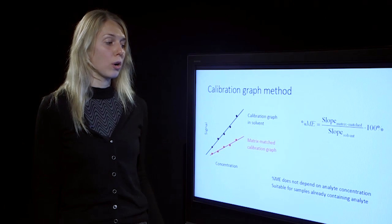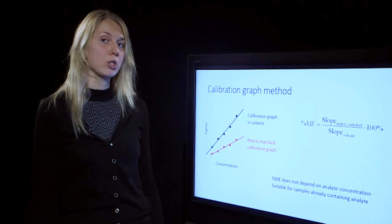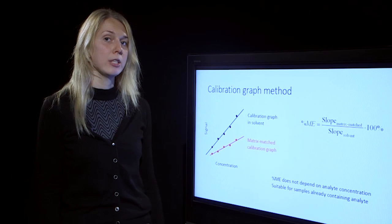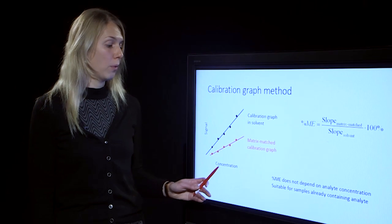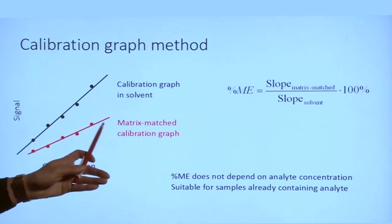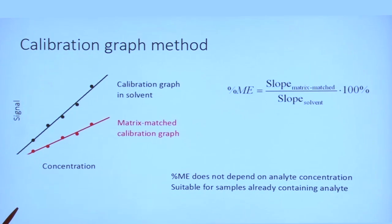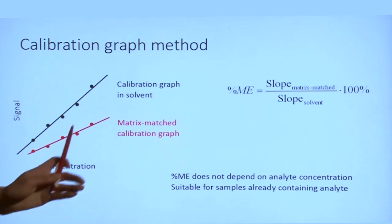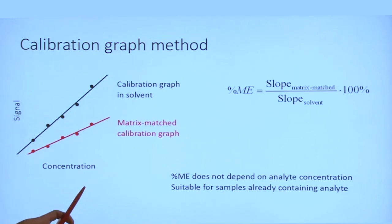In this case, extract that contains small amount of analyte is spiked with analyte and the matrix-matched calibration graph obtained. And as long as we stay within the linear range, the slope is not influenced by the small amount of analyte originally present in the extract.